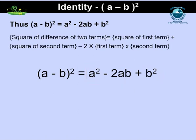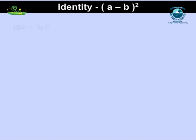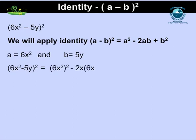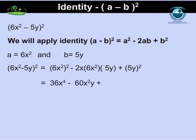Let's learn to apply this identity to expand or simplify an equation. To find the square of the binomial (6x²-5y)², we apply identity (a-b)². Here, a = 6x² and b = 5y. Putting the values in the identity, we get (6x²-5y)² = (6x²)² - 2×6x²×5y + (5y)² = 36x⁴ - 60x²y + 25y². So, the identity method requires fewer steps than the direct method.